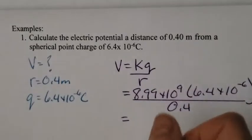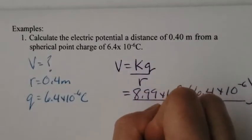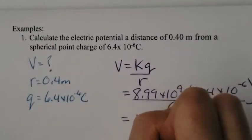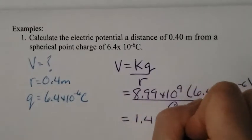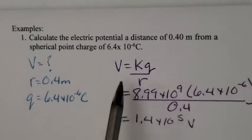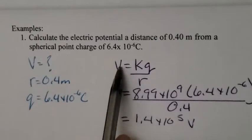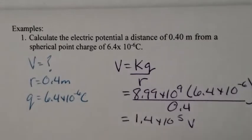When I put all that into my calculator, I end up with 1.4 times 10 to the 5 volts. So potential difference or voltage is measured in volts.